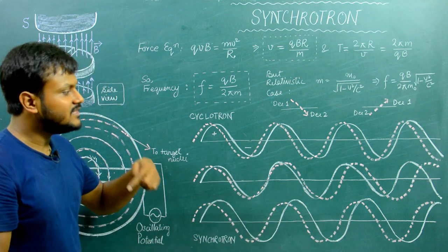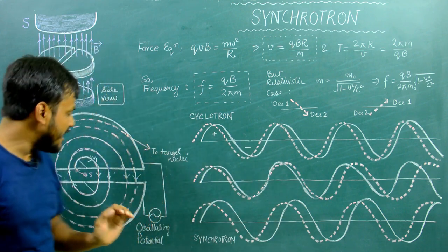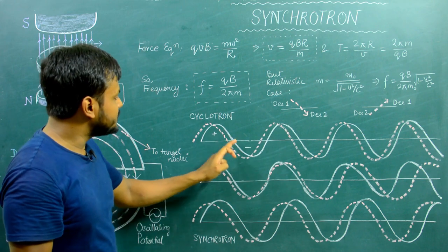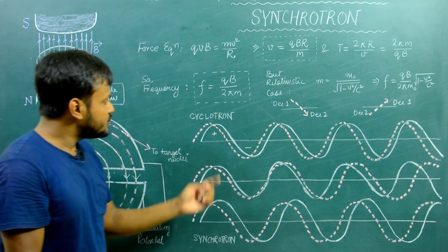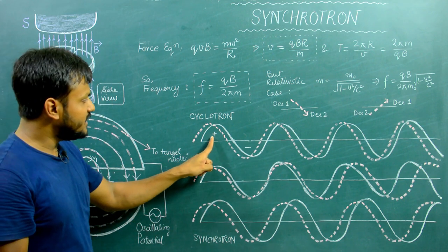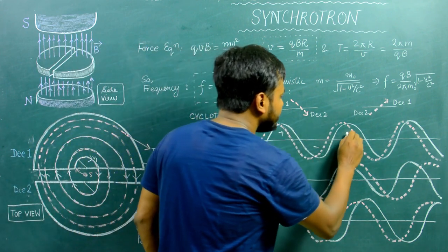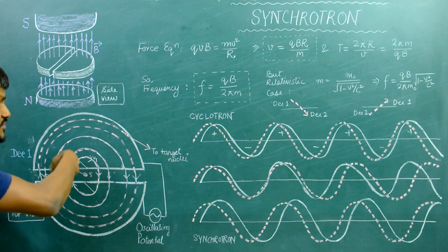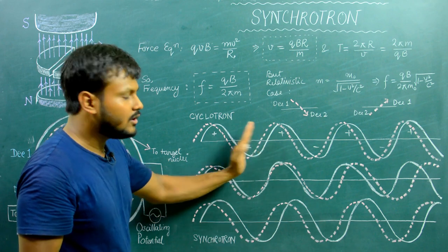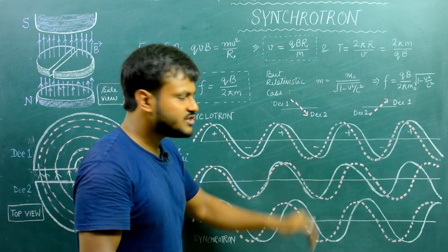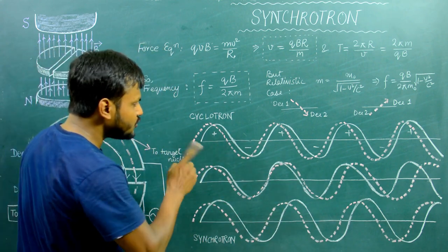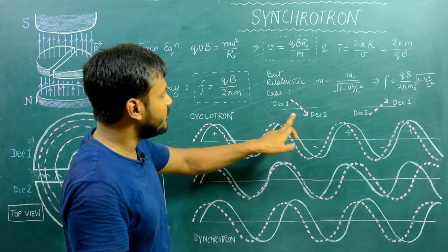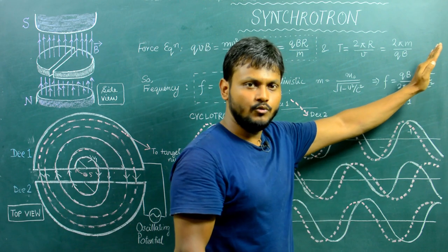This constancy of frequency is very important, because we need to synchronize the oscillating potential with the particle's motion. The oscillating potential must have a frequency exactly equal to the frequency of revolution of the charged particle, so that both are in phase. This way, every time the particle is in the gap between D1 and D2, it experiences positive acceleration. In the diagram, the white line represents the oscillating potential for D1 — alternating positive and negative — and the dashed pink line represents the revolution of the charged particle.